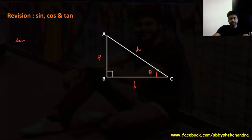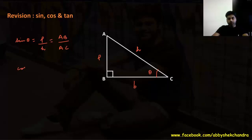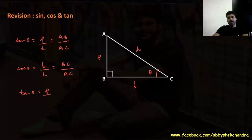Sin theta equals perpendicular by hypotenuse, which is AB by AC. Cos theta equals base by hypotenuse, which is BC by AC. Tan theta equals perpendicular by base, which is AB by BC. Had we taken angle alpha instead, the perpendicular and base would swap — sin alpha would be BC by AC.